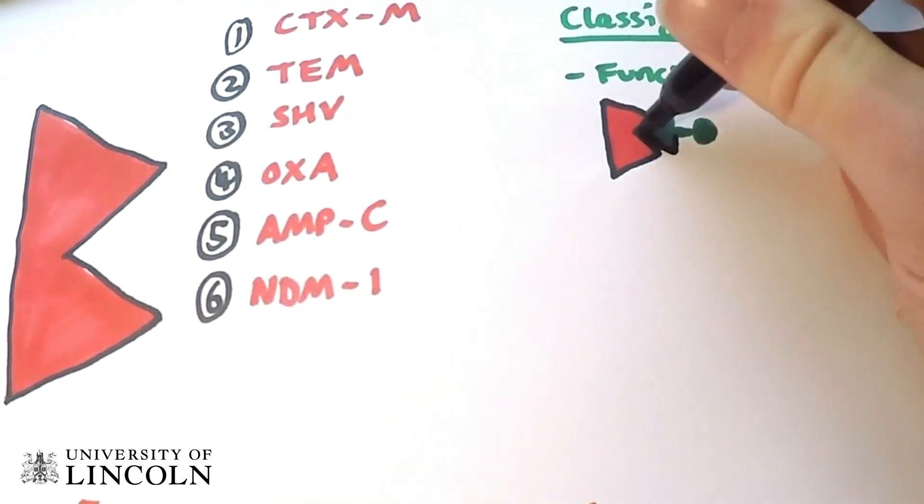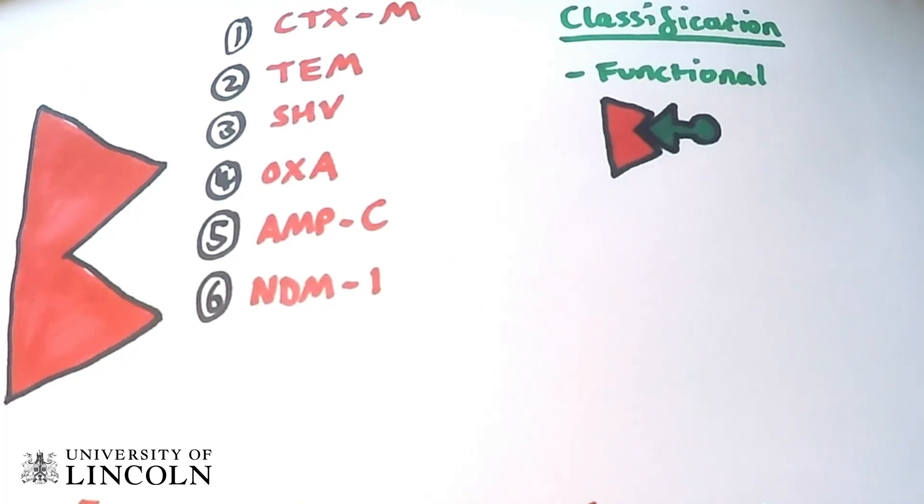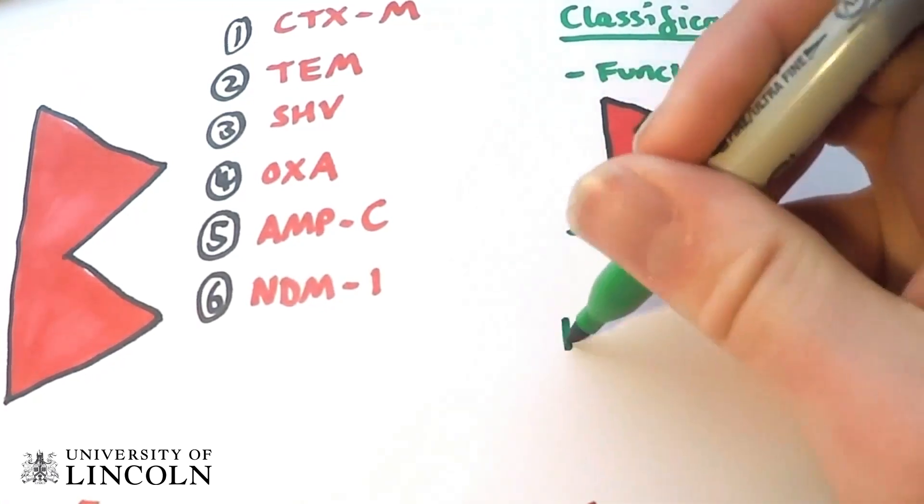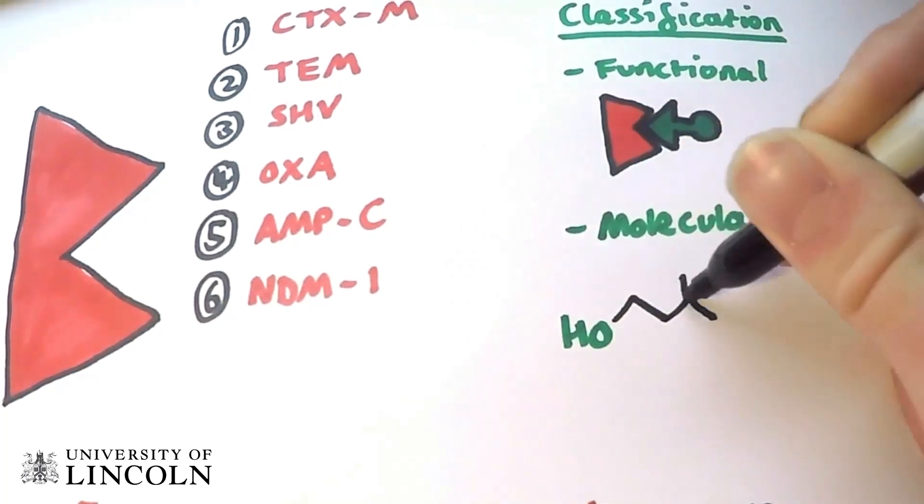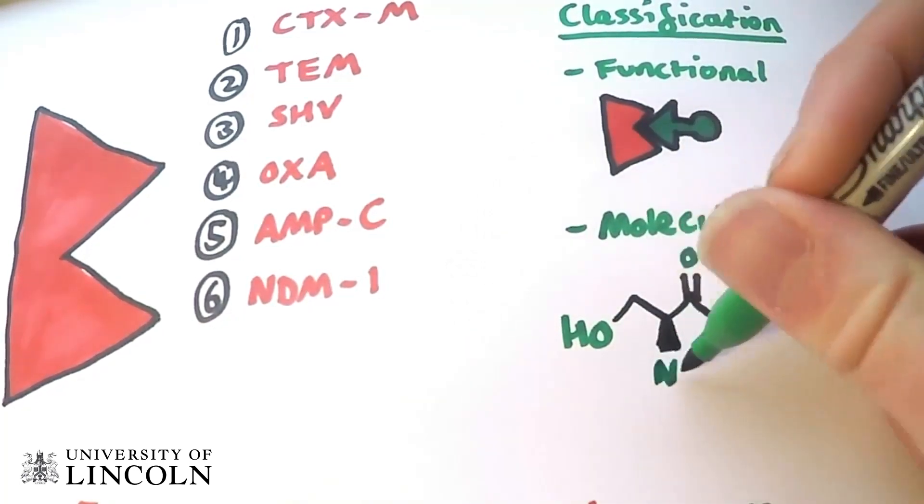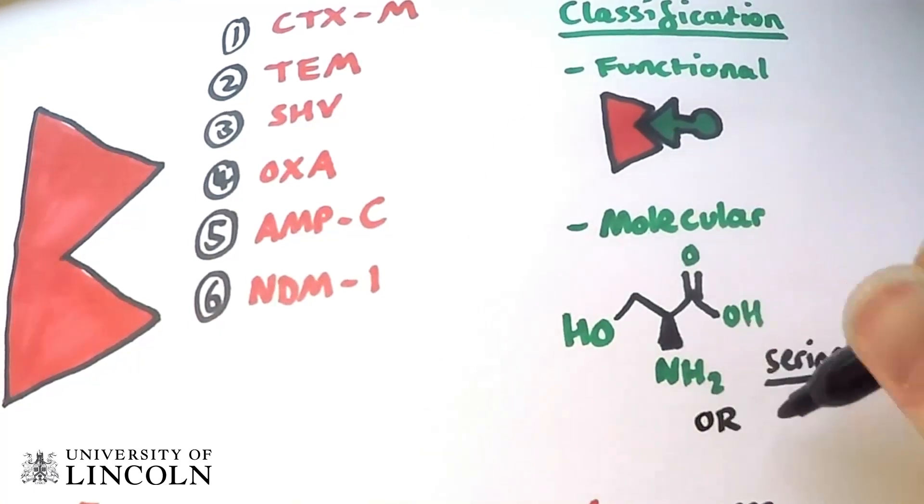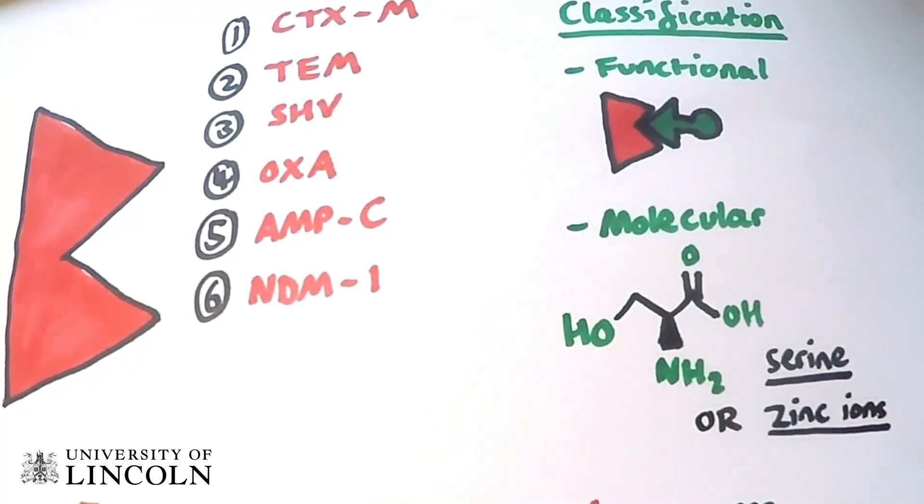First, there is the functional classification, where the enzymes are grouped by substrate and inhibitor profiles. Then, there is the molecular classification, which is based on amino acid sequence, with those using zinc ions in class B and those using serine for hydrolysis in groups A, C, and D.